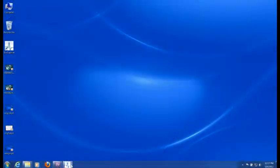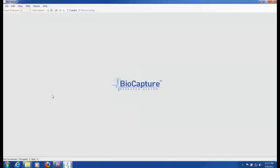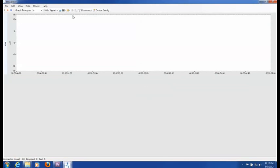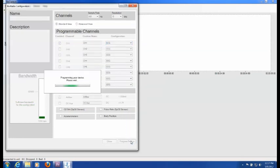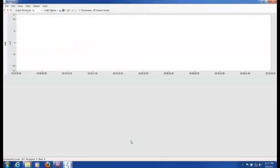We will then run BioCapture and press connect. We will then press device config and program the BioRadio for one channel of ECG. We will then press start acquisition and change the scaling to autoscale continuous.